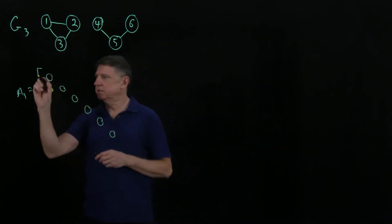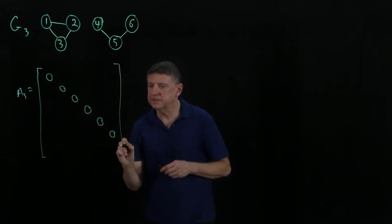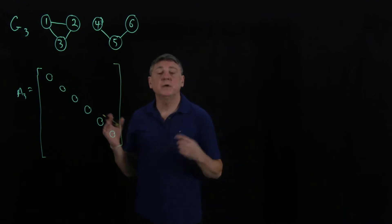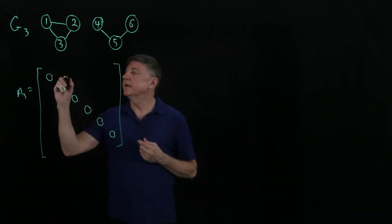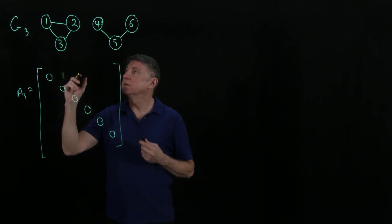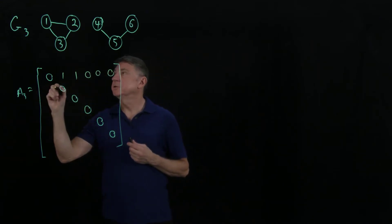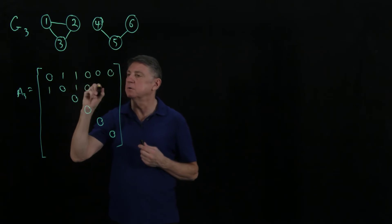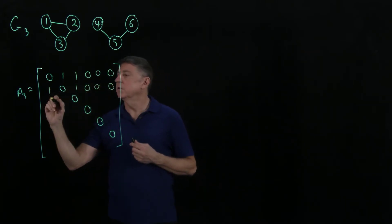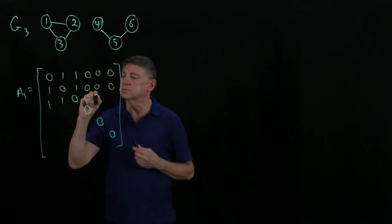We can see that 1, 2, 3, 2, 3, 0, 0, 0, 0. And now we can almost automatically fill these in. 1 is connected to 2, 1 is connected to 3, 0, 0, 0, 0. 2 is connected to 1, 2 is connected to 3, 0, 0, 0. 3 is connected to 1, 3 is connected to 2, 0, 0, 0.